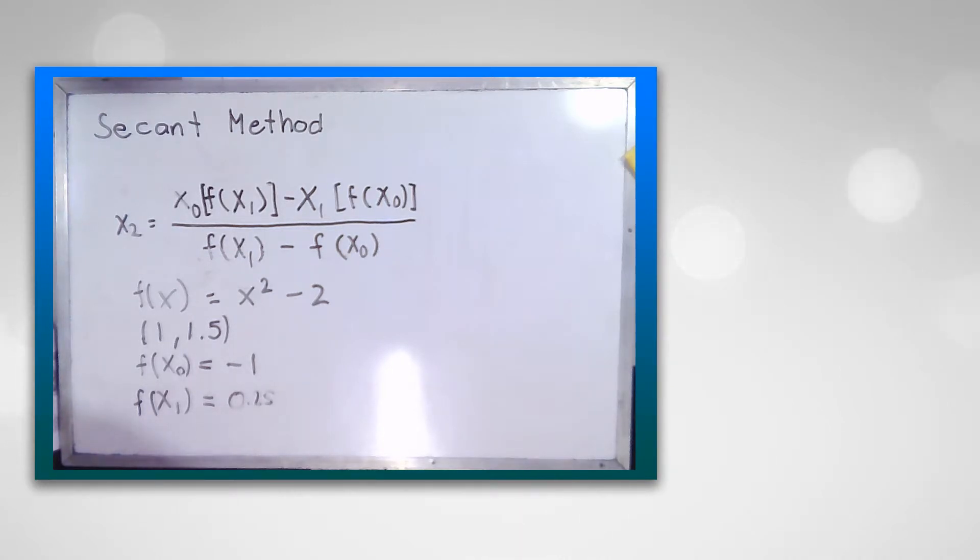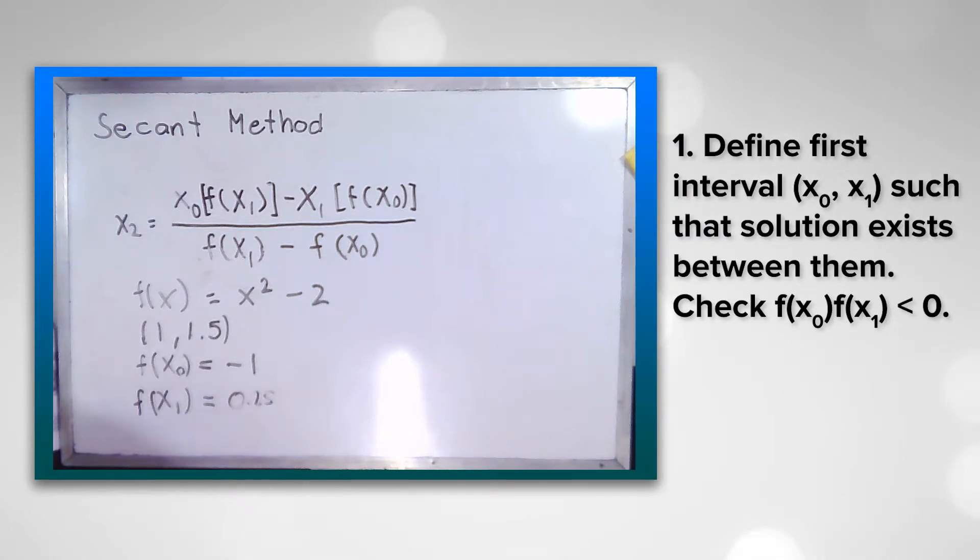Okay, again let's talk about the algorithm. Number one, let us define the first interval x₀ and x₁ such that solutions exist between them. The product of the functions f(x₀) and f(x₁), which is basically like substituting the value of x₀ into our equation, they must be negative. So we could assure that the root or the solution actually lies between them.